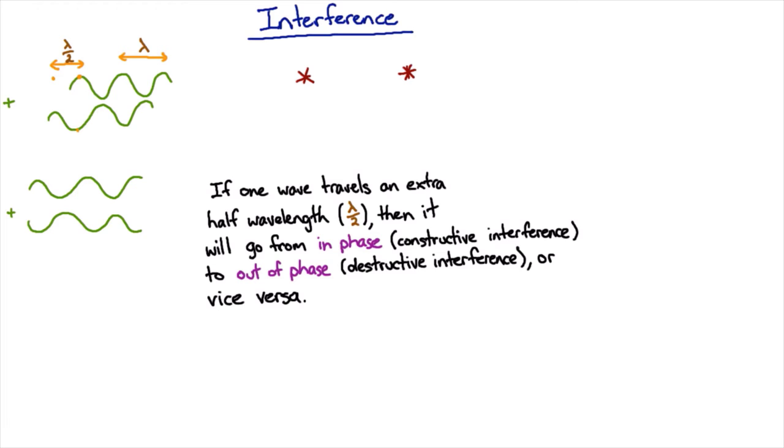So whether or not you get constructive or destructive interference depends on how much further one wave travels compared to the other. If you have a wave traveling from one source to a point, and then you look at how far the wave has to go from the other source to get to the same point, this point is where they're going to add up.